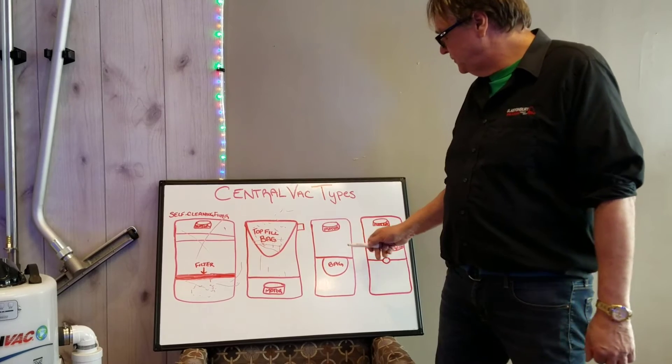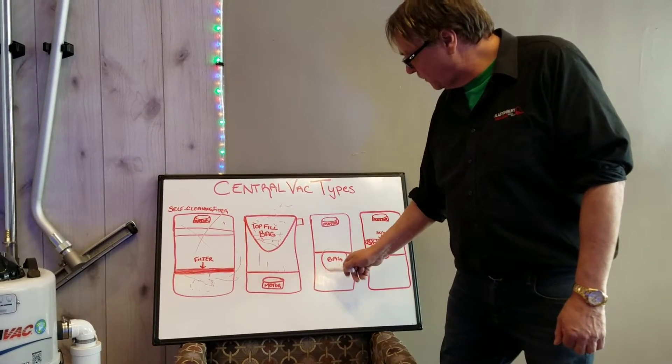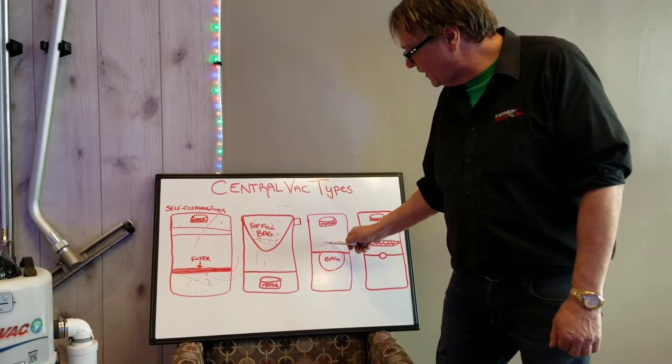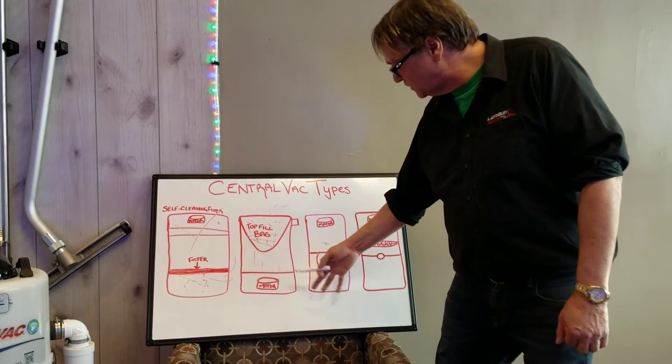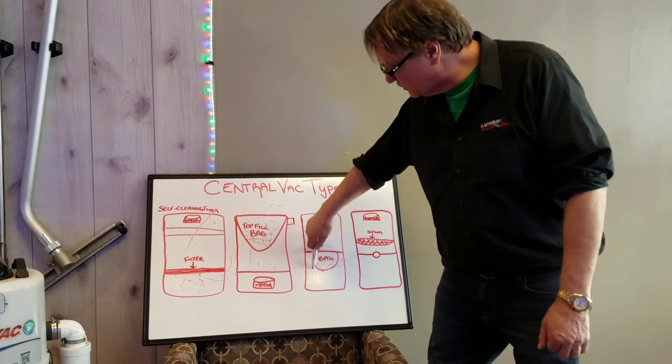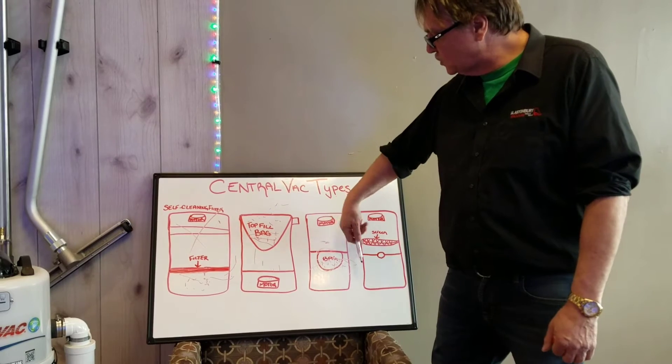Now the next one has a bag in the bottom down here, with a filter above the bag, so a fine filter. So all the heavy dirt is going to go into the bag, and the bag will just be down here. And air can still go through the chamber, even though it has a bag. So the dirt will be in the bottom of the bag, and just has good suction.